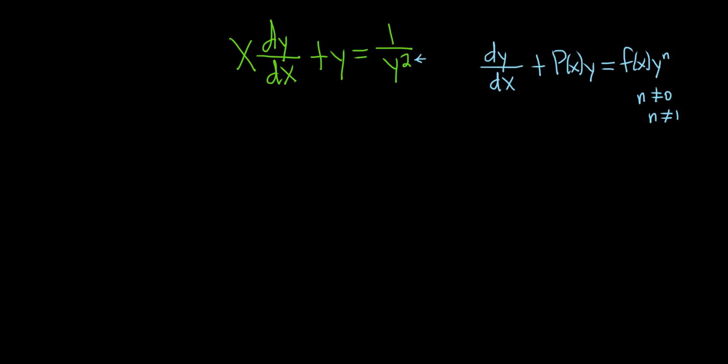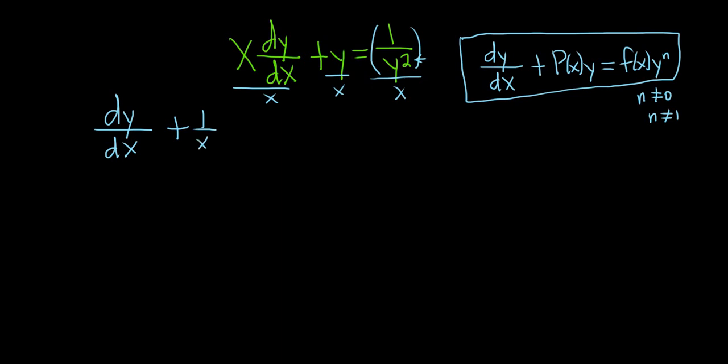The first step in solving Bernoulli differential equations is to write them in this form. So we'll start by dividing everything by x. So we'll end up with dy/dx, dividing this by x, and then divide this by x. We can write the second term as 1 over x times y. And then this piece here becomes 1 over x, and then bring up the y, so that'll become y to the negative 2. So now it's in what's called the standard form.